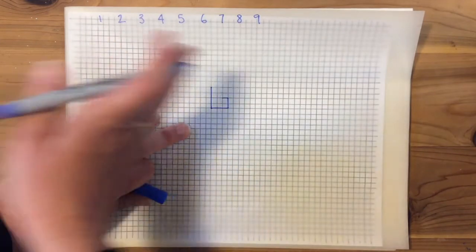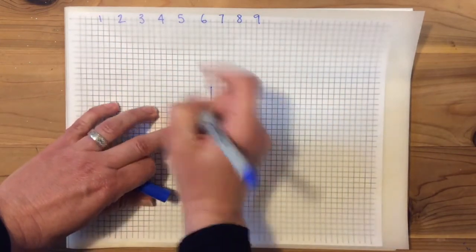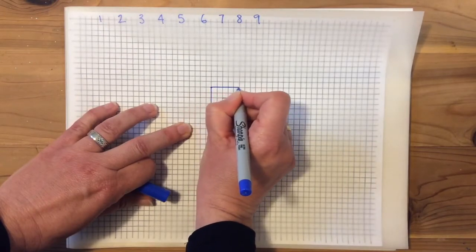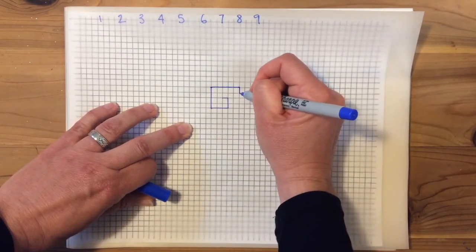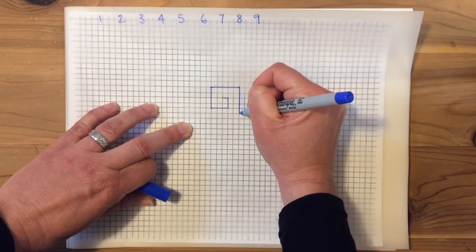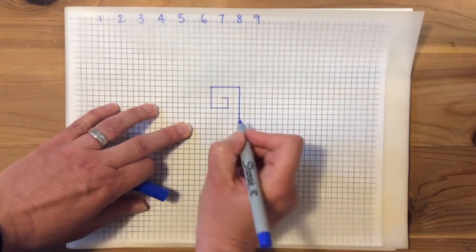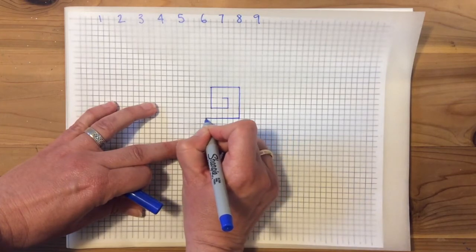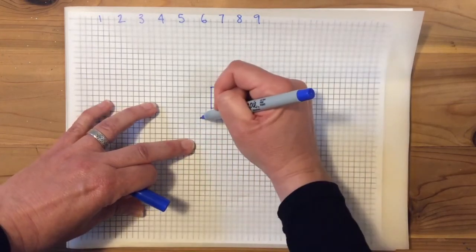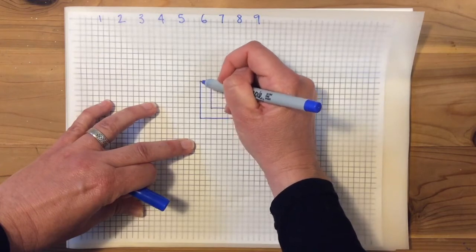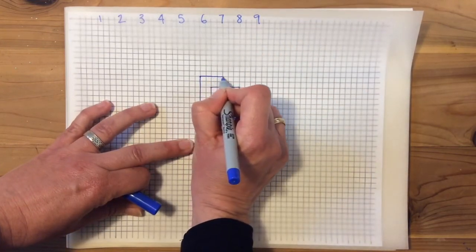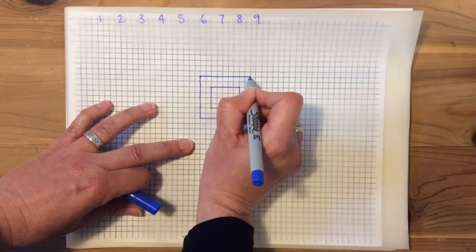And then each time it's 90 degrees. So again, I'm going to go forwards 5 this time. 1, 2, 3, 4, 5. Down 1, 2, 3, 4, 5, 6 this time. And now we're going to go backwards 7. 1, 2, 3, 4, 5, 6, 7. Upwards for 8. And forwards for 9. 1, 2, 3, 4, 5, 6, 7, 8, 9.